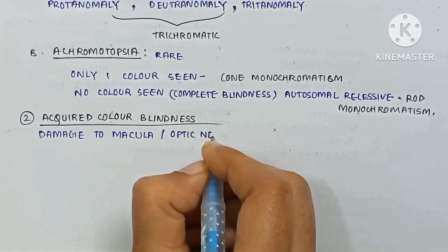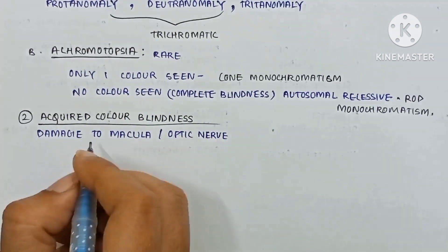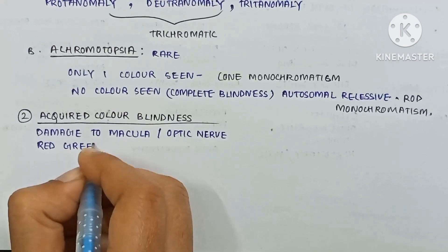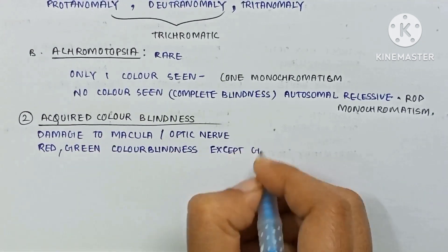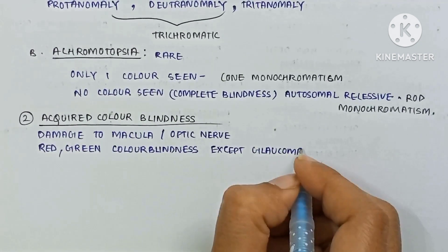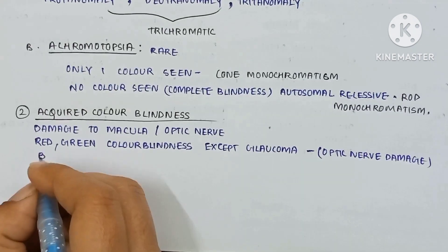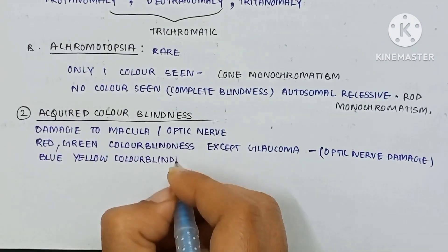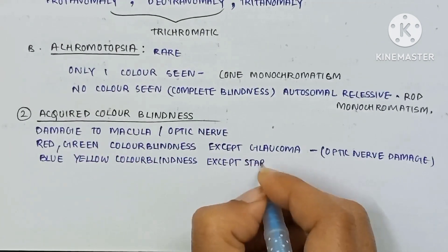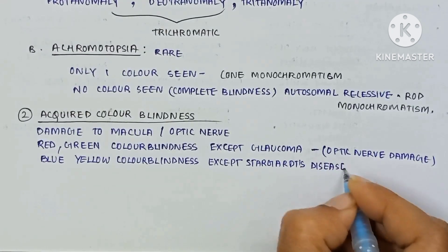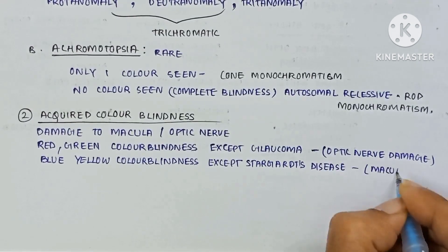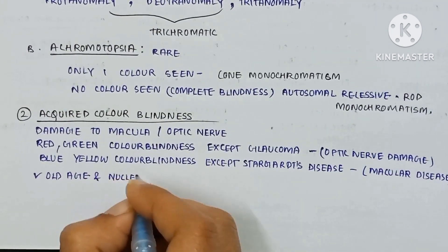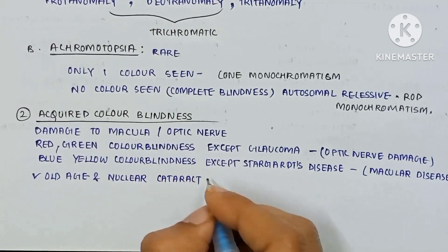Acquired color blindness is due to damage to the macula or optic nerve. Red-green color blindness, except in glaucoma, is due to optic nerve damage. Blue-yellow color blindness, except in Stargardt's disease, is due to macular disease. It is also present in old age and in nuclear cataract as blue color blindness.